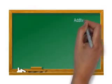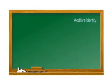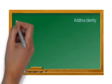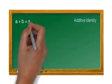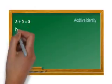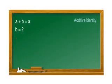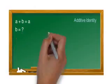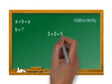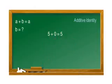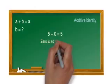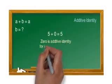Let's see additive identity. Let's say a and b are two integers. If you add a and b and the result is the number a only, then what is the value of integer b? Observe this example: 5 plus 0 is equal to 5. If you add 0 to 5, the result will be 5. So 0 is the additive identity for integers under addition.